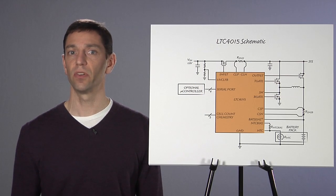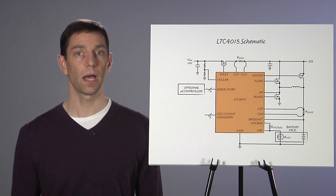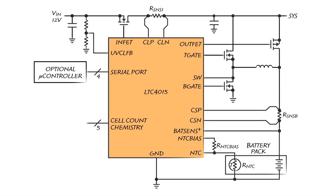To allow proper functionality from current limited or power limited supplies, the LTC4015 implements an input current limit. If the combination of the system load and the battery charge currents reaches the input current limit, then the charge current is automatically reduced to prevent an input overload condition.